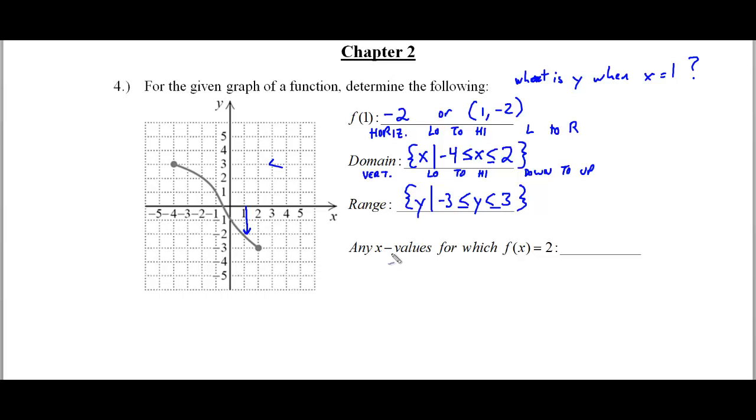Okay, now our final spot here says any x values for when f of x is equal to 2. So this is asking, what is x when y is 2? Because f of x really means y. And we notice how there's no value for x here, so that's what we're trying to find. So we're going to go where y is equal to 2, and we're going to go to where the line is.